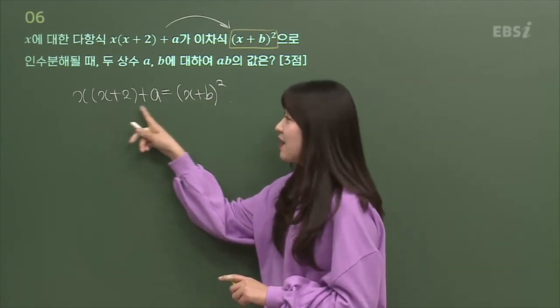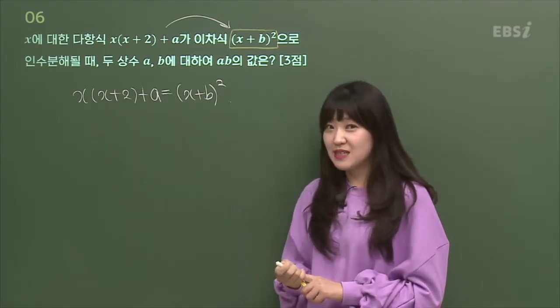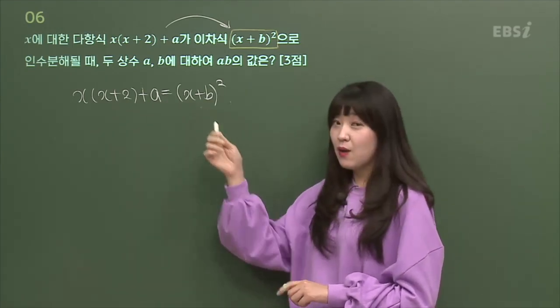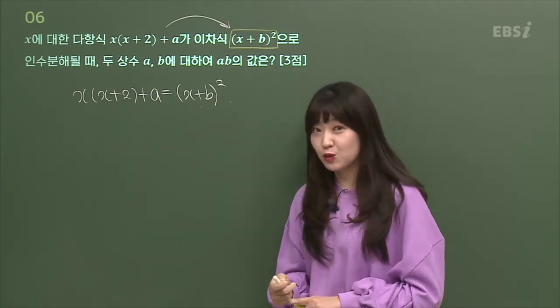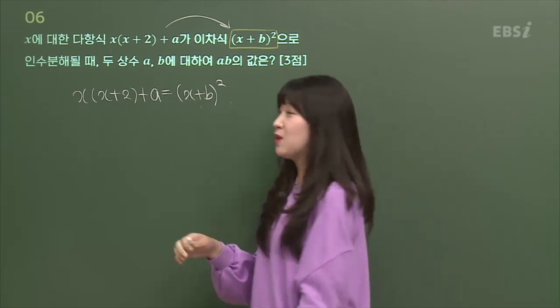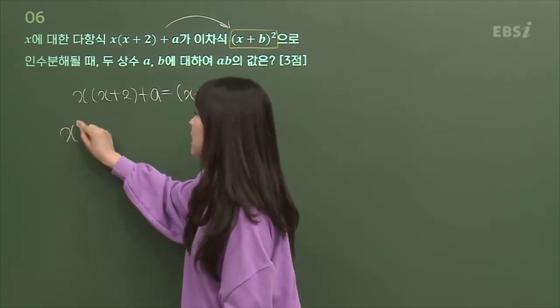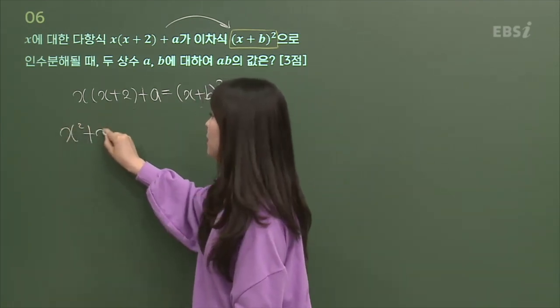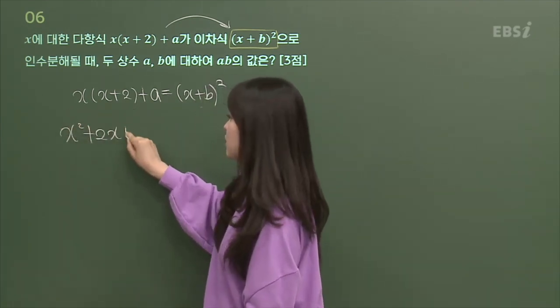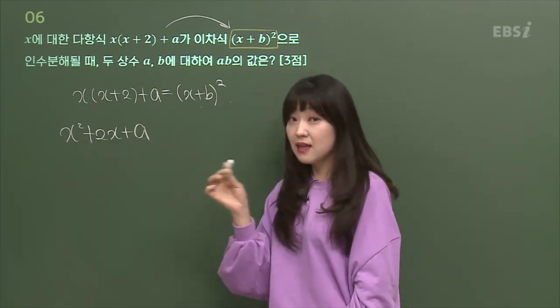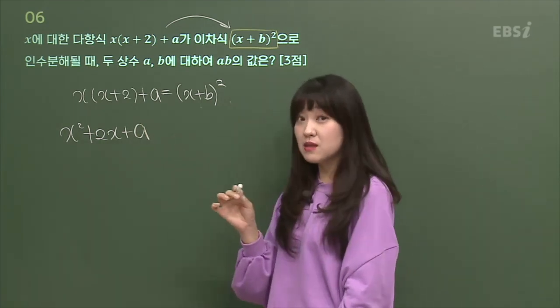얘는 이미 전개가 얼추 되어 있지. 얘는 무슨 식? 완전 제곱식이고. 그냥 한 단계 더 정리해보자. 전개했더니 X 제곱, 2X 플러스 A. 나 그냥 하나씩 진짜 전개만 했어.